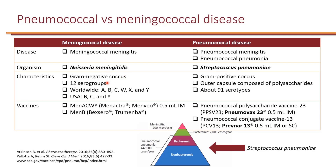There are 12 serogroups, and you will see this reflected in the meningococcal vaccines — there are different vaccines. For example, MenACWY has four serogroups, whereas MenB only has the B serogroup.